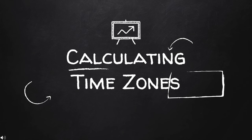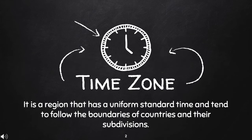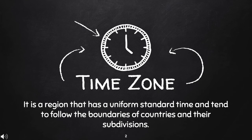Calculating Time Zones. What is a time zone? It is a region that has a uniform standard time and tends to follow the boundaries of countries and their subdivisions. If you have noticed, at any time of the day, countries differ in time. That is because we have different time zones.